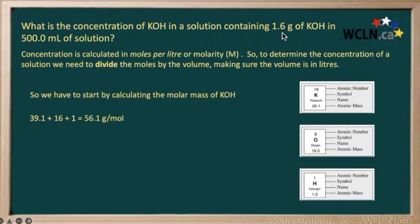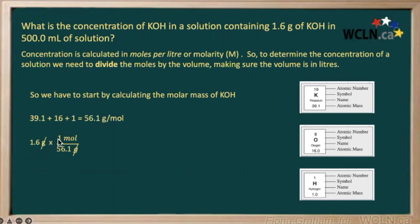We only have 1.6 grams, so let's see how many moles that would be. We calculate that using the conversion factor from our molar mass. Notice that the units cancel out, giving our final answer in moles. So we have 1.6 times 1 divided by 56.1, giving us 0.0285 moles.